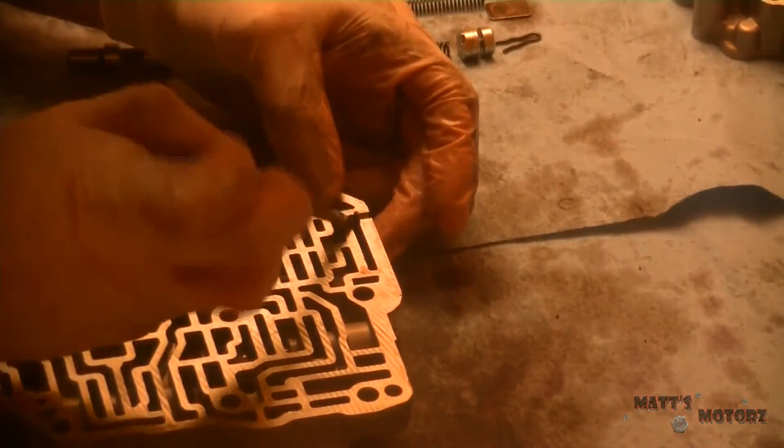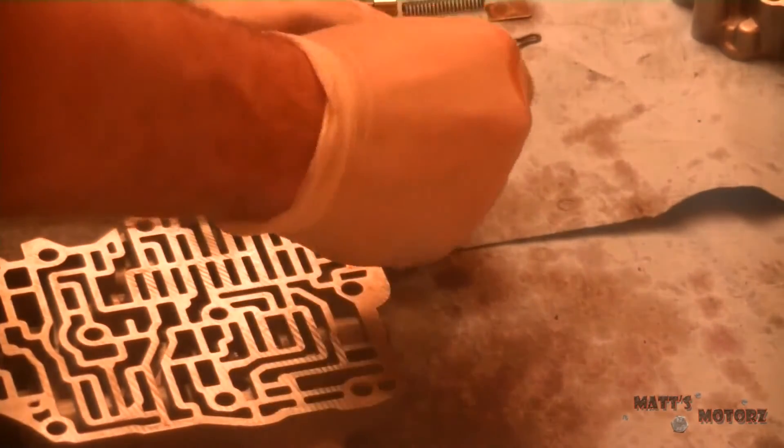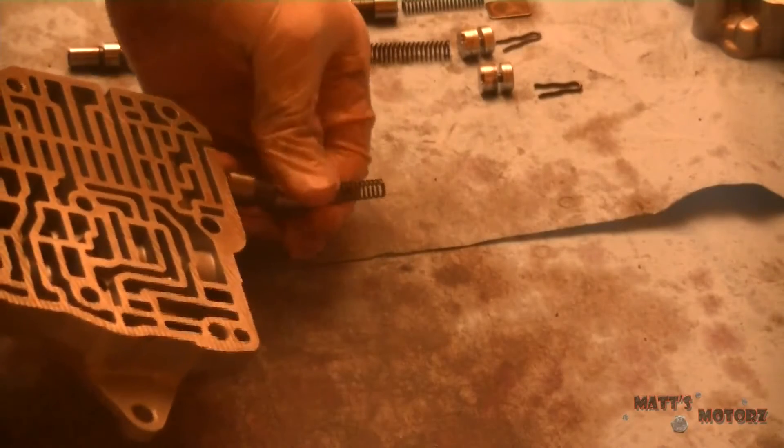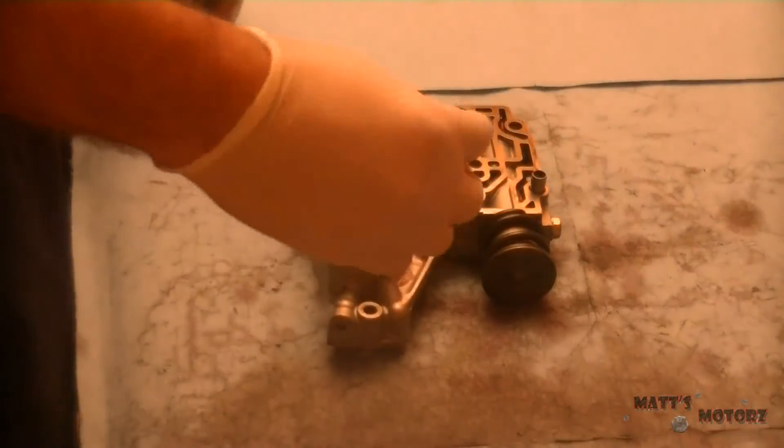And, the last valve in this valve body is the 2-3 shift valve. It's got another one of these little tabs. Or little pins here. Whatever you want to call them. And then, the valve comes out. With this spring.